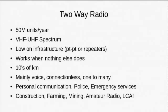The worldwide market for two-way radios is around 50 million units per year. They typically use VHF and UHF spectrum, a little bit lower in frequency than mobile phones or Wi-Fi. One of the key features is that they're low on infrastructure — you don't need cell phone towers or even electricity to keep them going. Typically they're used in point-to-point mode or via a repeater, which is like a single cell phone tower sitting on a hill. Two-way radios work when nothing else does, which is why they're particularly popular with emergency services.